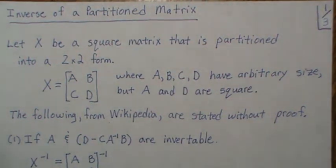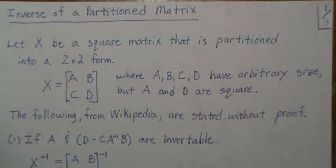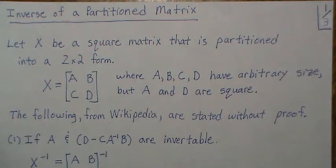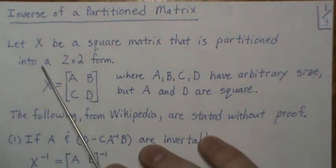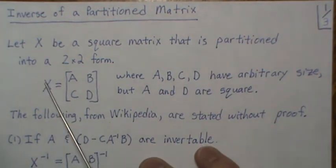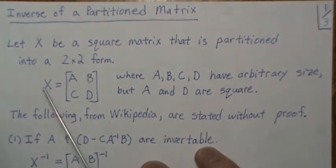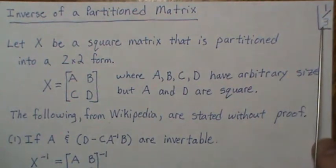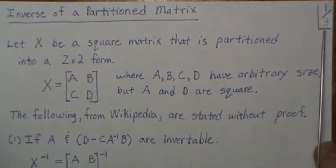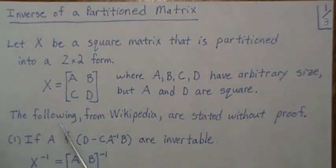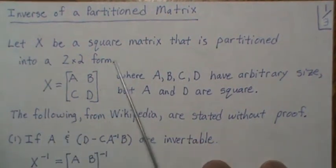In this video we look at the inverse of a partitioned matrix. I'm covering this now because we're going to use these results when I look at variance inflation factors in the multiple linear regression setting — that video should be out in another two or three weeks. This is taken straight from Wikipedia, at least the results are, but the proofs are not. This '3' here used to be a '2', and I'll explain why when we get there.